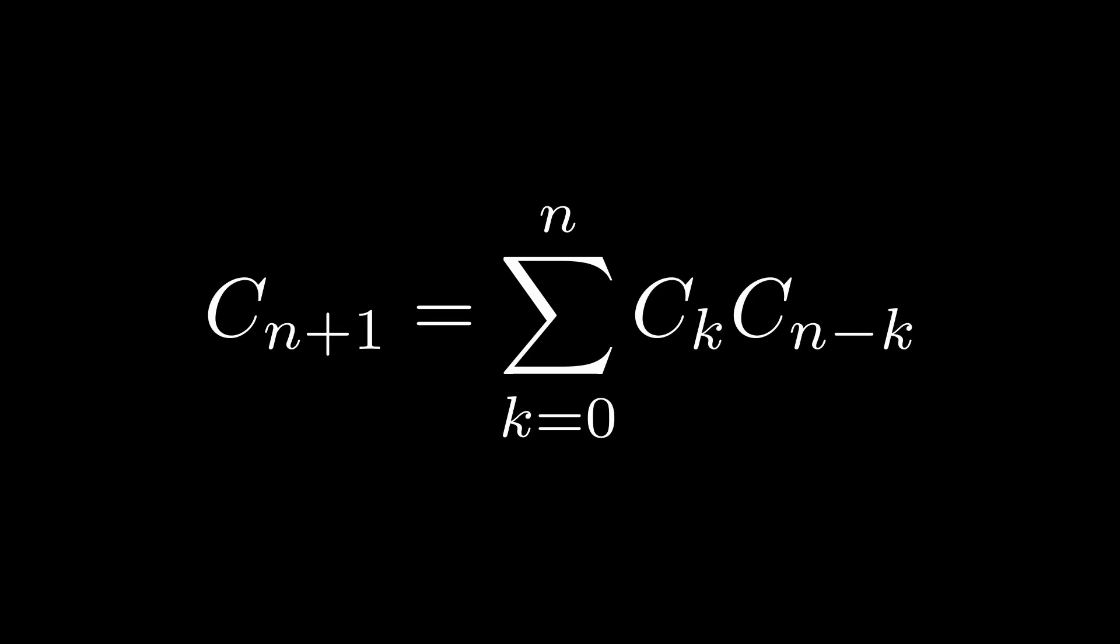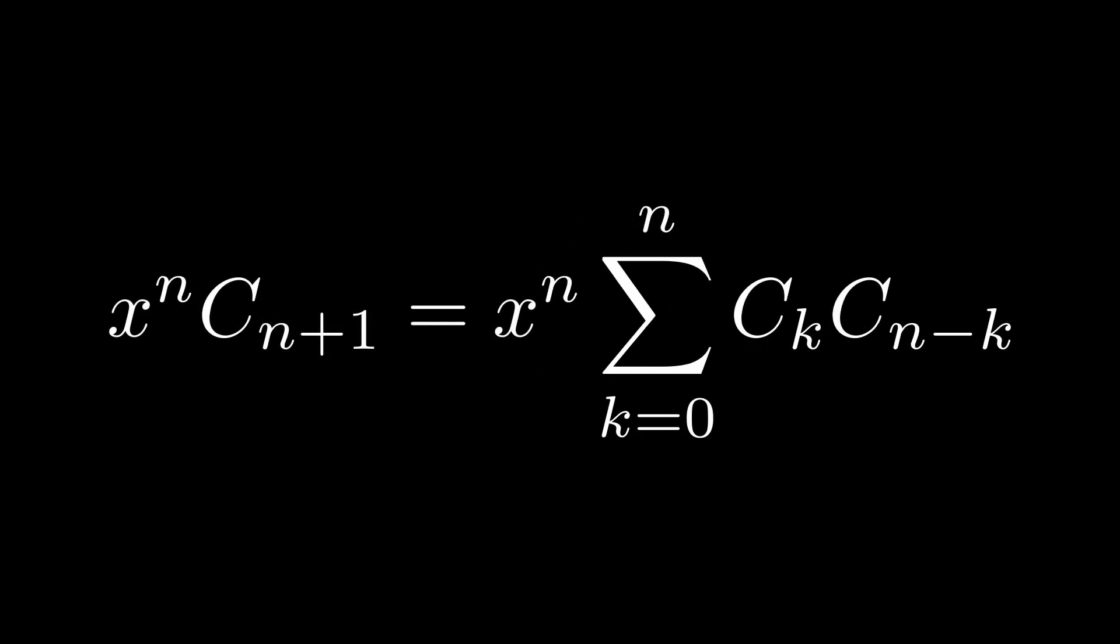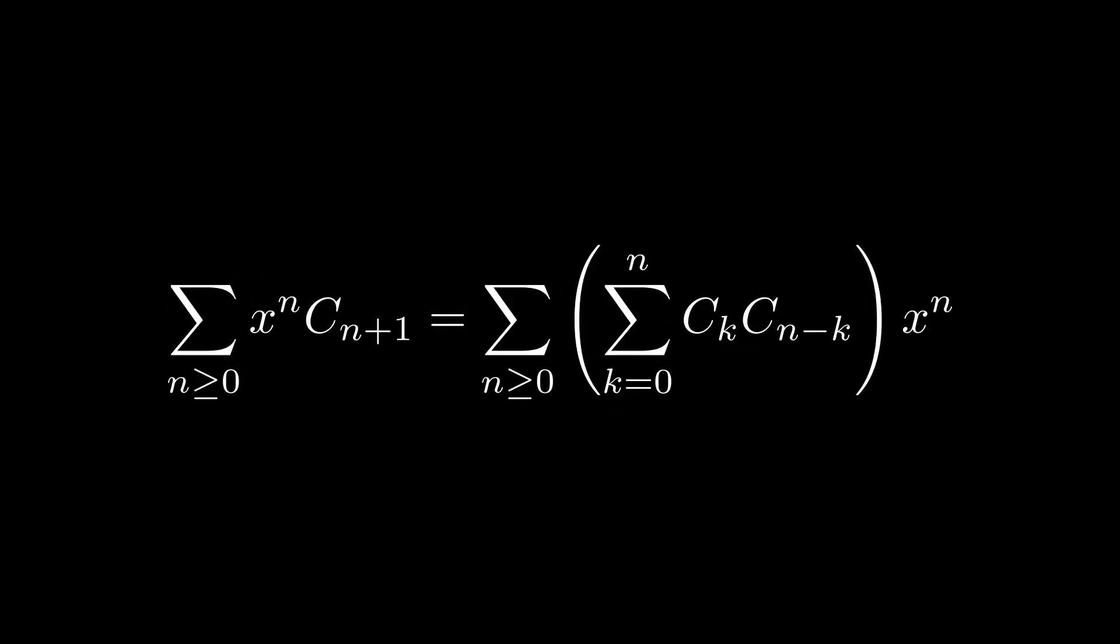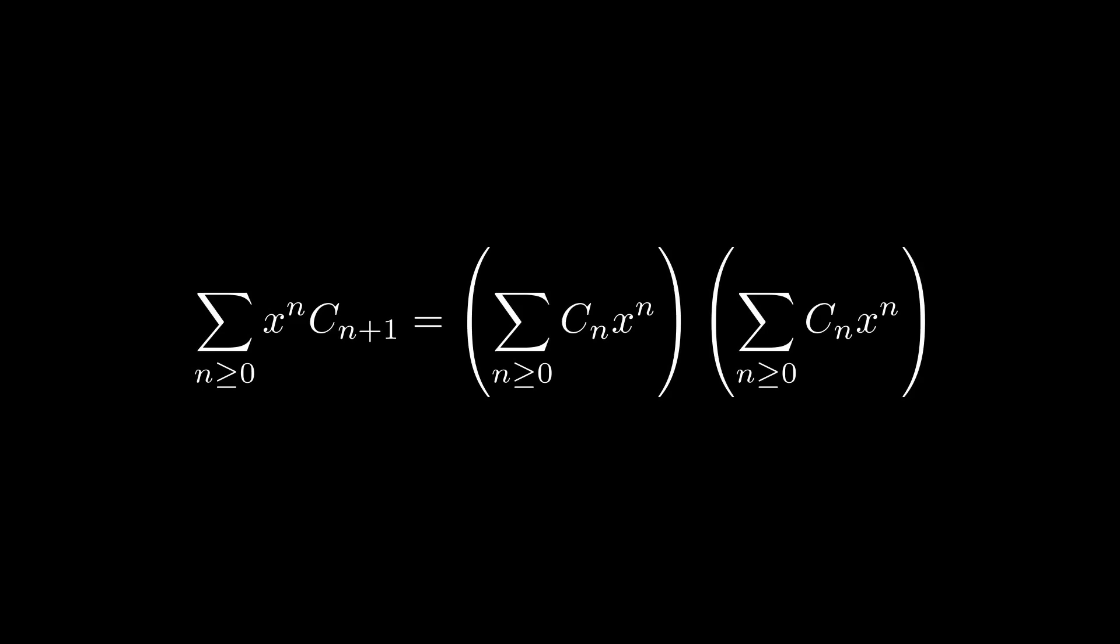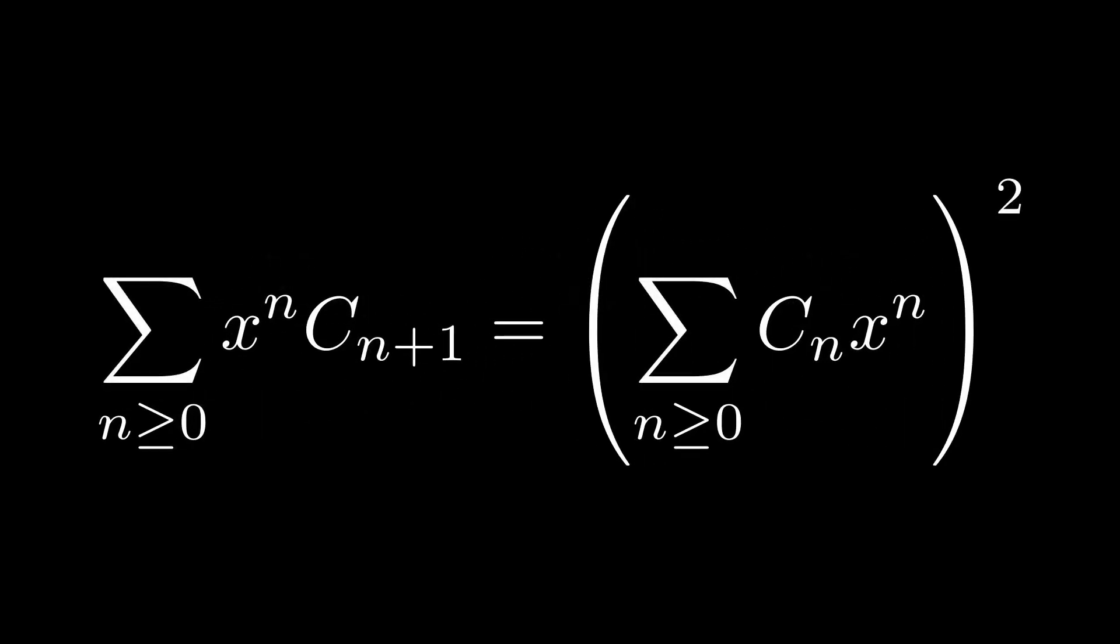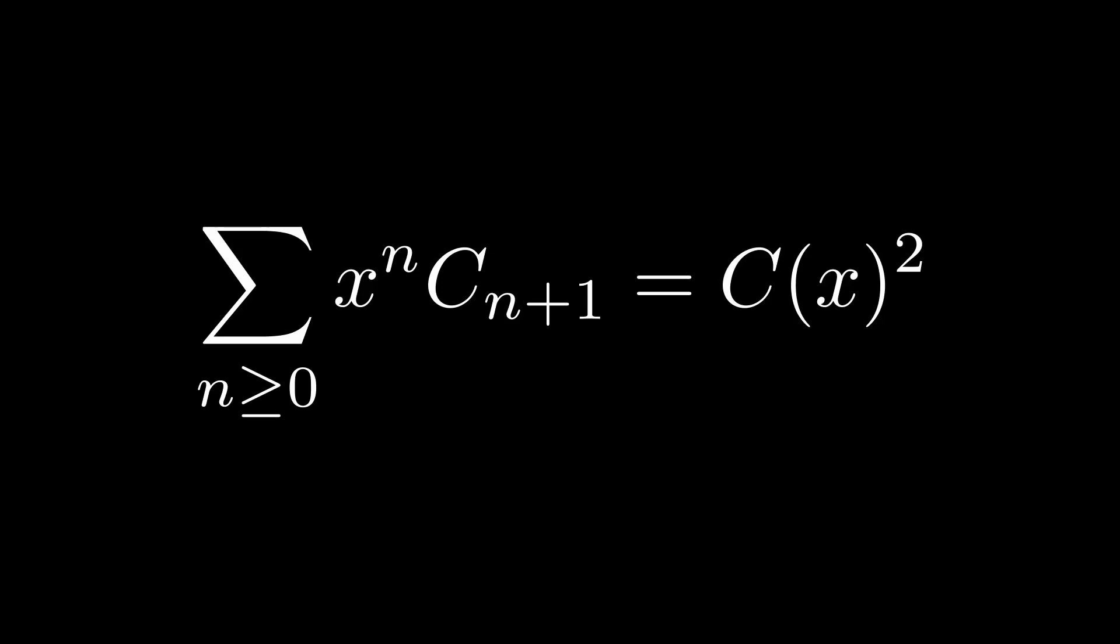As a first step, we will prove that the previous generating function is equal to the following. To obtain this, we'll start from the recurrence relation. We'll multiply both sides by x raised to the n and then take the sum over all values of n, which are non-negative. On the left-hand side, you can see that this is nothing but a Cauchy product of the generating function of the Catalan numbers multiplied by itself. And so, this can be simplified to c(x) quantity squared.